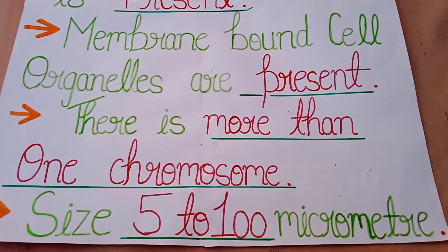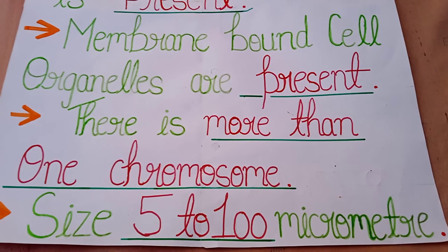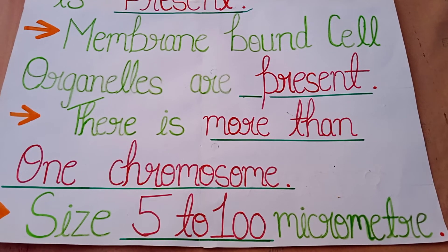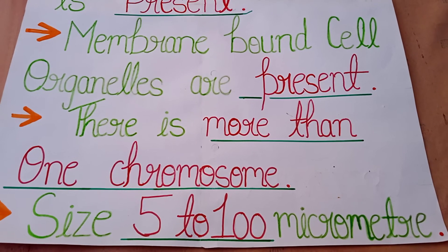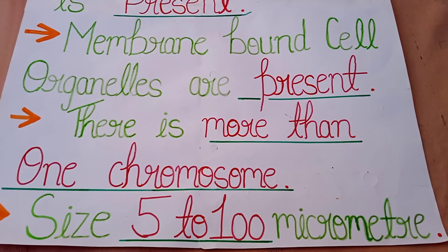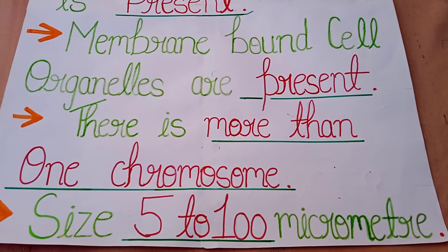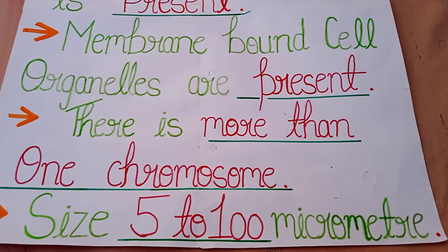The fourth point is there is more than one chromosome. In a eukaryotic cell, more than one chromosome is present. Eukaryotic cell mein ek ya ek se zahada chromosome present hote hain.